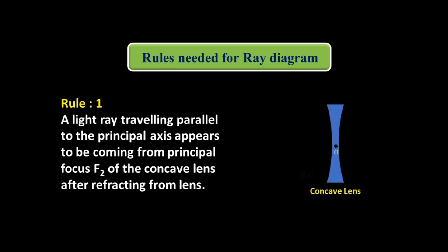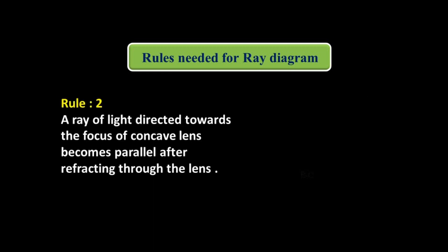This is the Concave Lens with the Principal Axis. A ray coming from the object is parallel to the Principal Axis — this is the Incident Ray. After refraction, as per rule, it goes away from the Principal Axis. This is the Diverging of Light Rays, but it appears to be coming from Principal Focus F2.